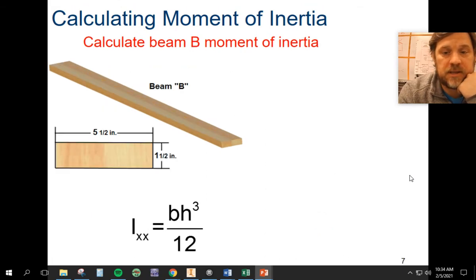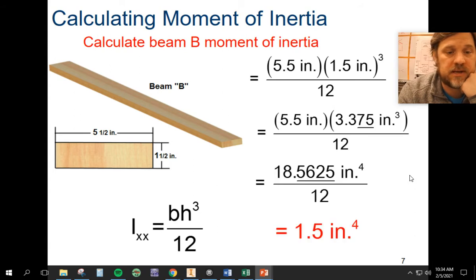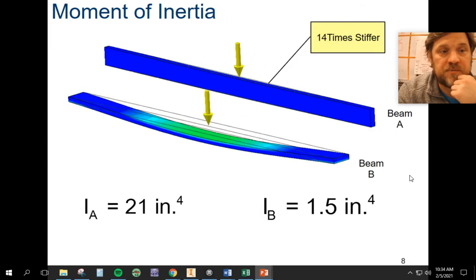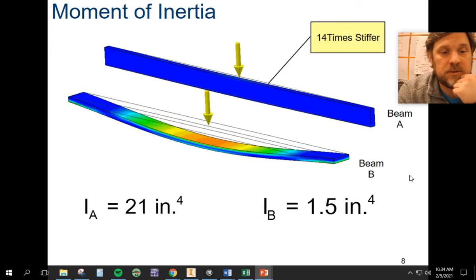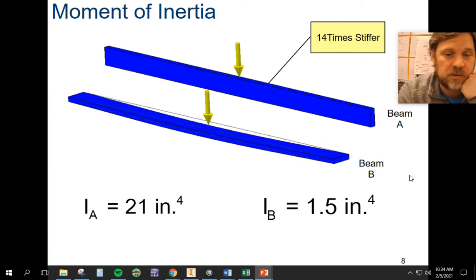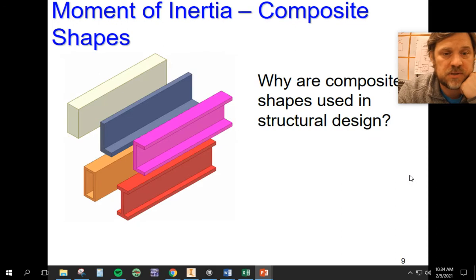You ought to be able to get something close to that when you put it in your calculator. And if you do it in the beam, you'll notice that it's a lot less. So we went from 1.5 to 21. So very different numbers, 14 times stiffer in the joist position, which is why we use them like that when we do floor joist or a ceiling joist.